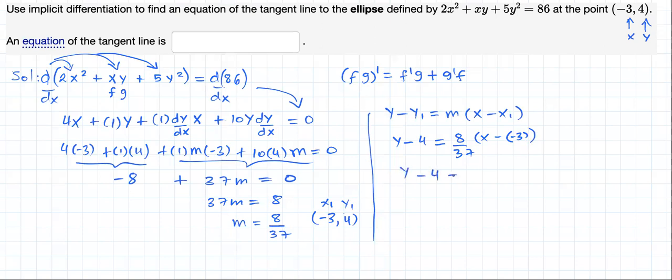Let's simplify. 8 times x, 8x, divided by 37. Minus and minus is plus, so plus 3 times 8, which is 24 over 37.